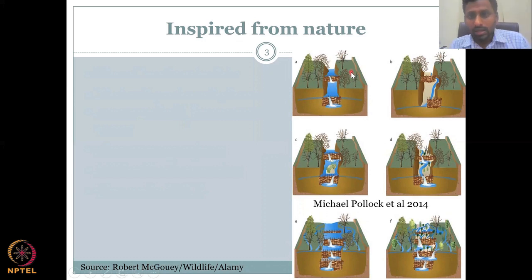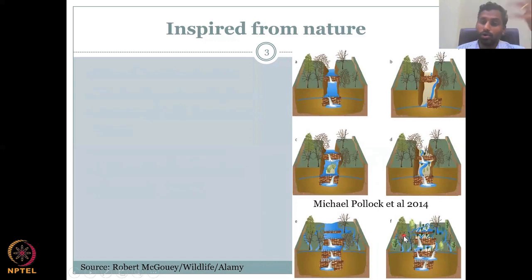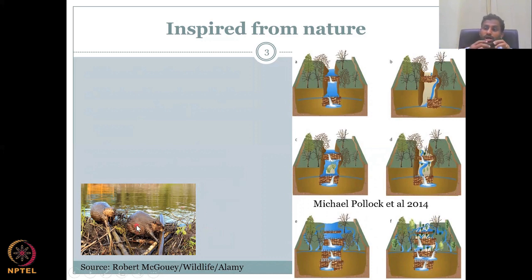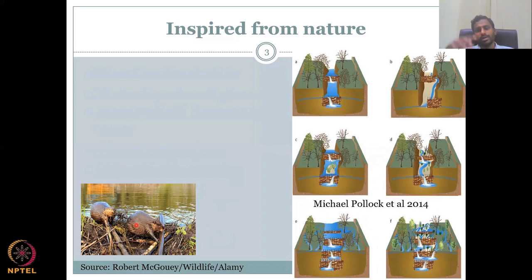In stage A it's barren land — trees are not full with leaves. On the other end, you have more trees, plants, and life forms. Beavers made the first check dams: they eat wood, bring wood saps and other materials, and make a big dam across the river for fishing and to store water because they like to swim, and also for their dietary habits.